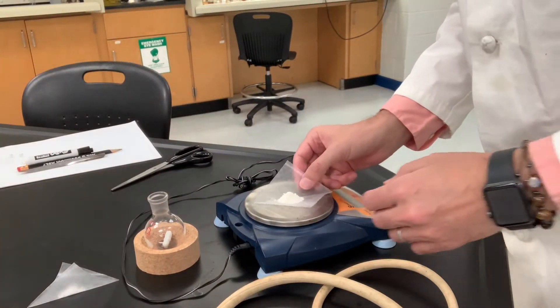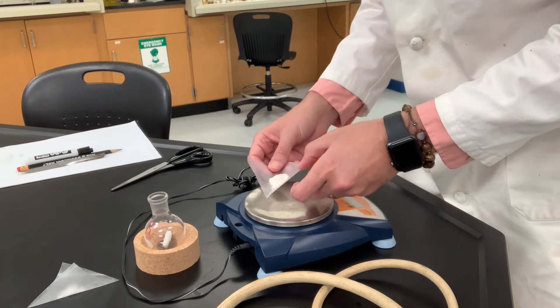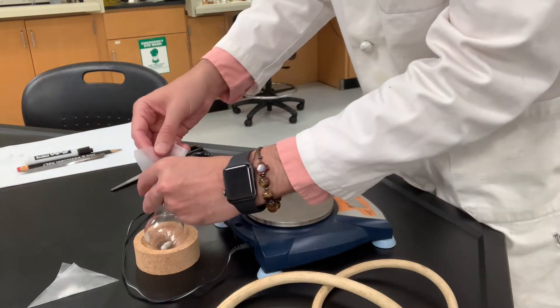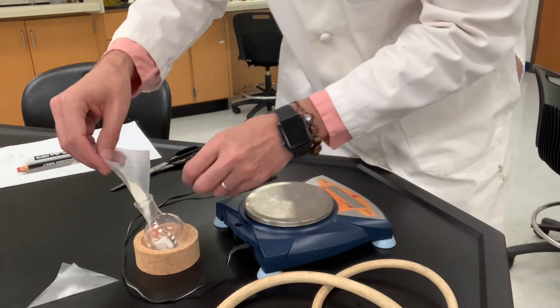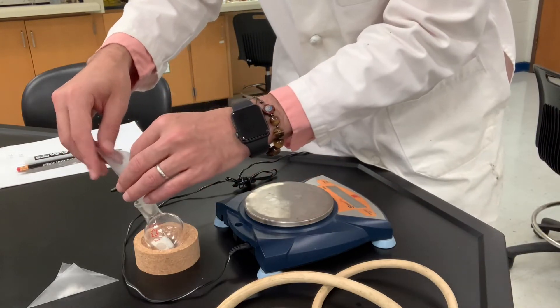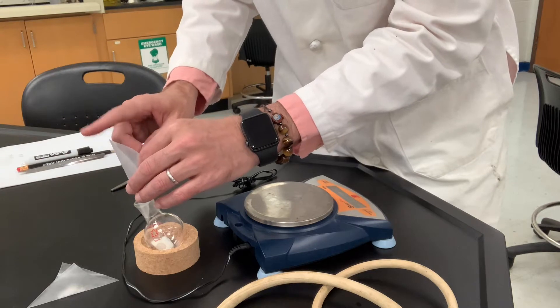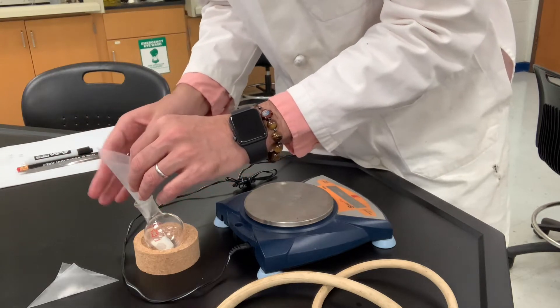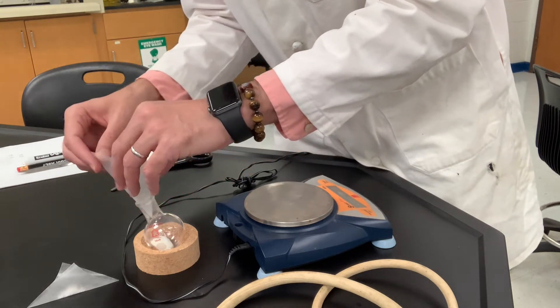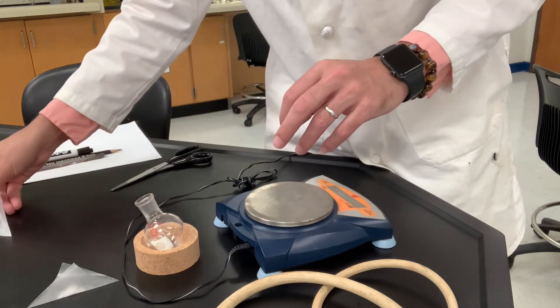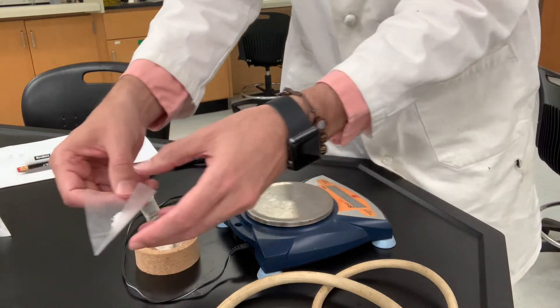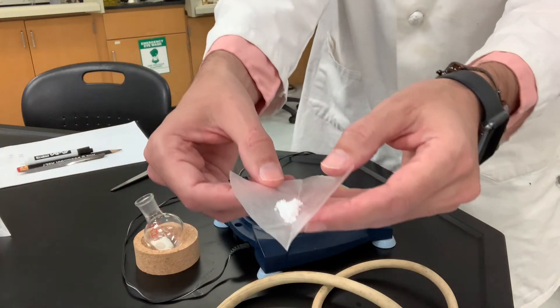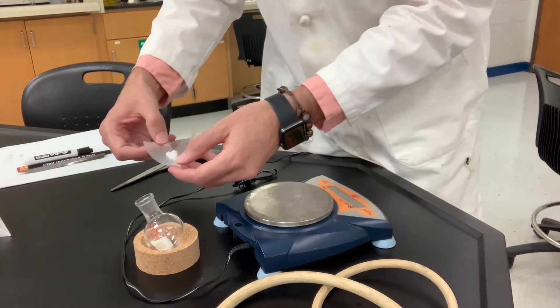So we'll add this to our guy here. Okay, then we'll add 0.5 grams of ammonium nitrate. Ammonium nitrate is a white crystalline powder here.